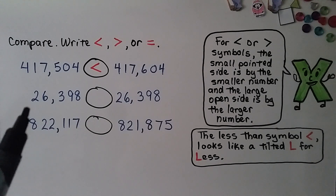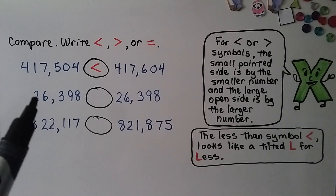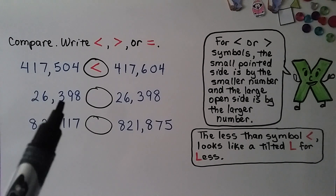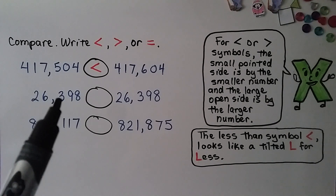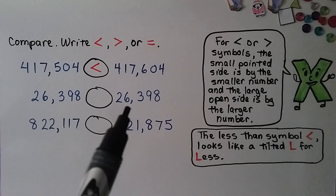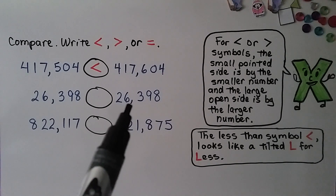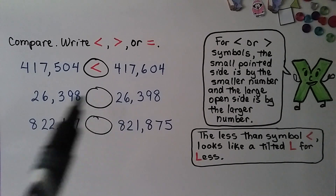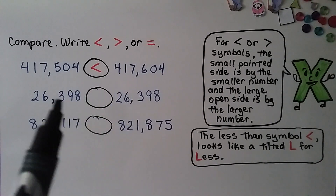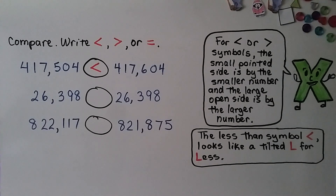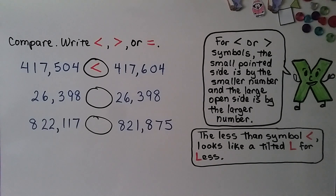Now look at this number: 26,398. And this number: 26,398. It's the same number on both sides — these numbers are equal to each other.